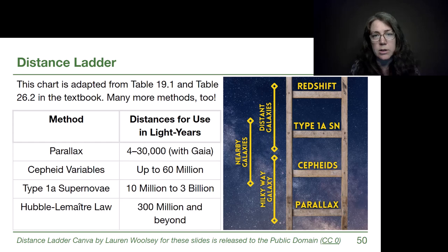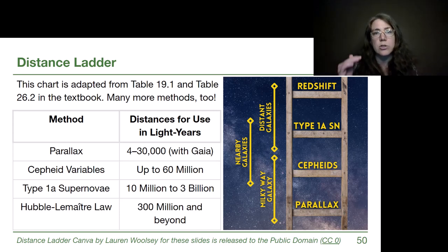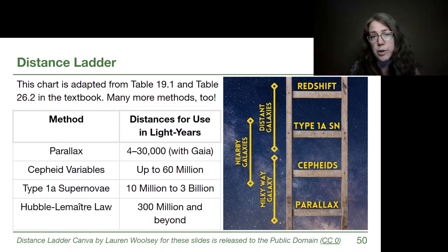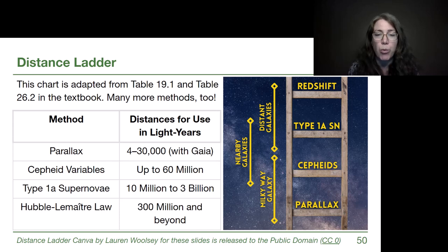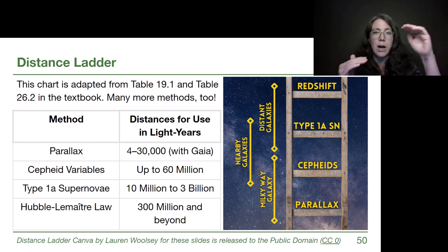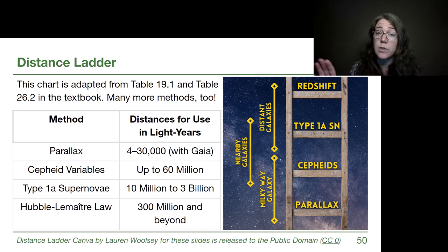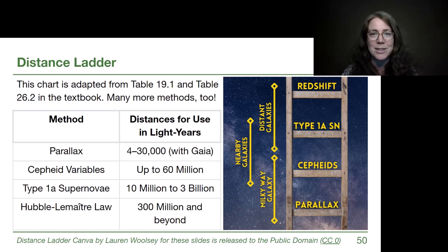Once we have true distances to Type 1a supernovae, that allows us to have distances and measured velocities to calibrate the Hubble constant, so we can get our foot up to the next rung of redshift. Redshift here stands for the Hubble-Lemaître Law, because what we measure is redshifts of galactic expansion, and it works for distances beyond our gravitational pull as the Milky Way galaxy. As you read through the different methods and distance ranges, recognize that they overlap — that's absolutely key to the distance ladder idea. There are also many other methods outside our curriculum that are in the textbook, and we can discuss them in student support hours.